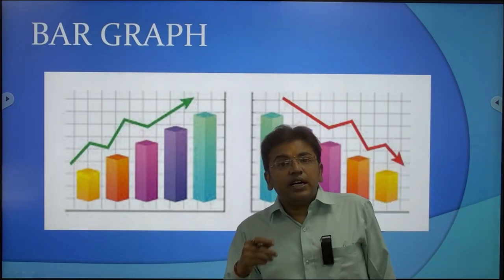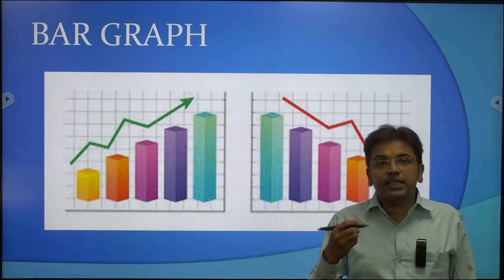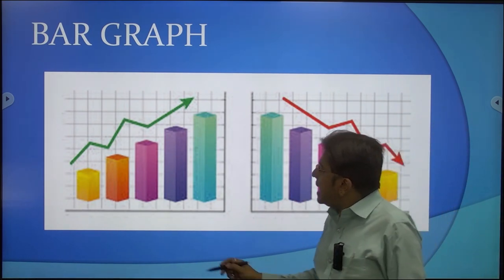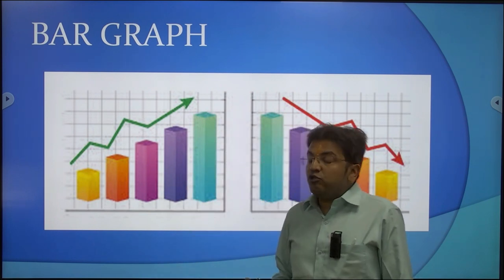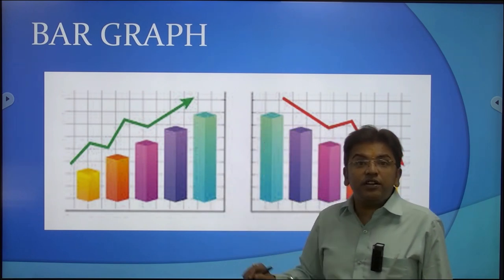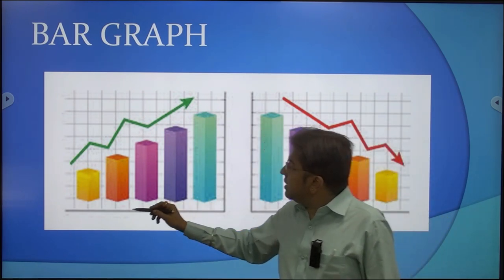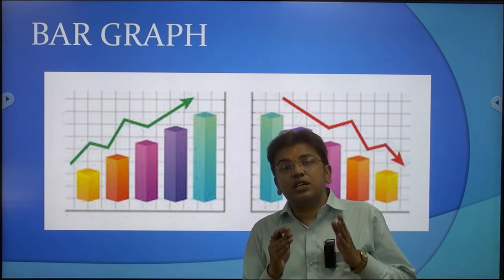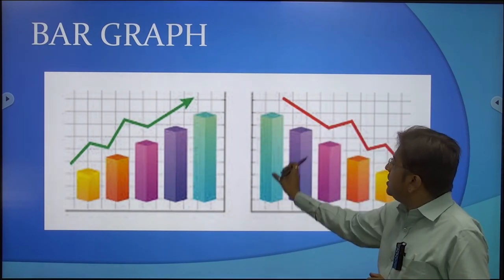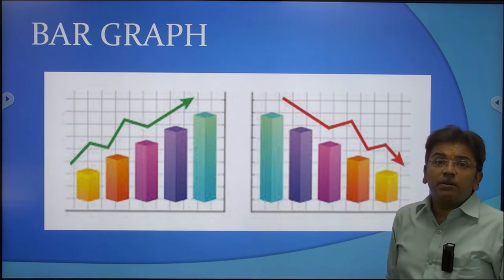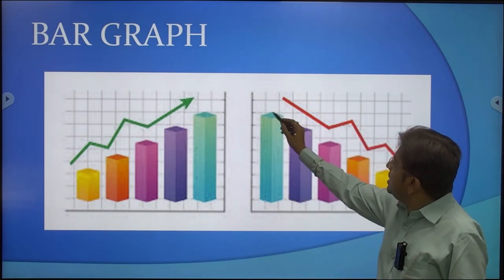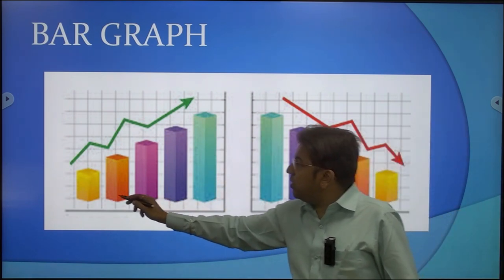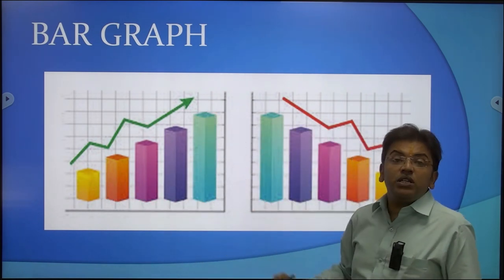Bar graph is also a most important and useful manner in which you can present your data. You have x and y series, and according to your class intervals — such as 0-5, 5-10, 10-15, 15-20, 20-25 — you select different values and present your data. Bar graph is one of the most important tools because it shows the hierarchical relationship — which category is most important. For example, the tallest bar is the most important, showing growth from the lowest to the highest.